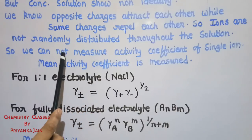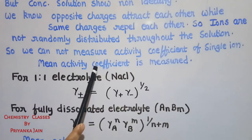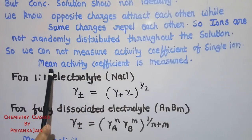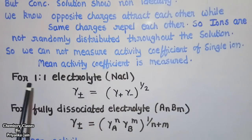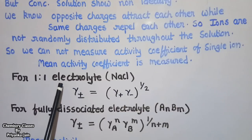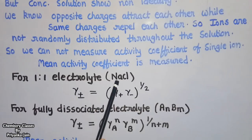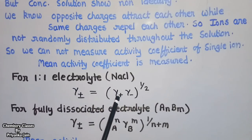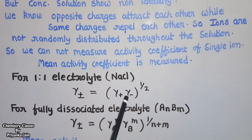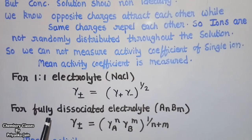Since ions are not randomly distributed, we cannot measure the activity coefficient of a single ion, so we measure the mean activity coefficient. For 1:1 electrolytic solutions such as NaCl, the mean activity coefficient is given by the formula: mean activity coefficient equals the product of the activity coefficient of the cation and activity coefficient of the anion, raised to the power 1/2.